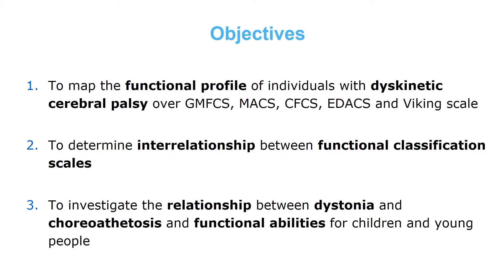Based on these needs, the objectives of this study were: 1. to map the functional profile of individuals with dyskinetic CP over GMFCS, MACS, CFCS, EDACS, and Viking Scale; 2. to determine the interrelationship between functional classification scales; and 3. to investigate the relationship between dystonia and chorioathetosis and functional abilities for children and young people.